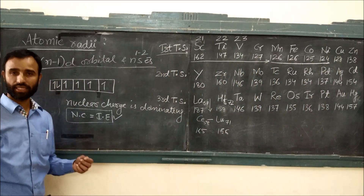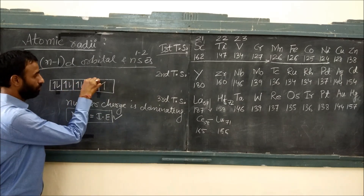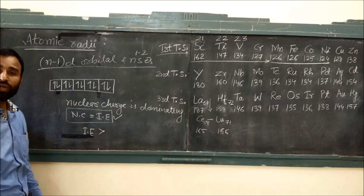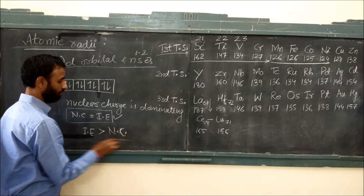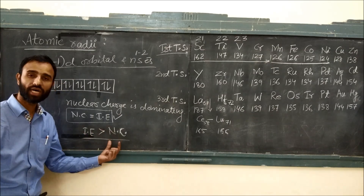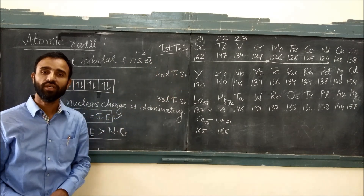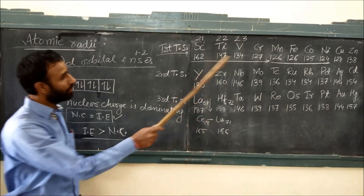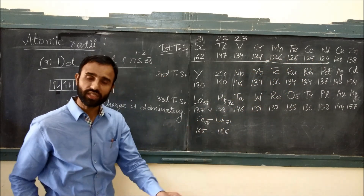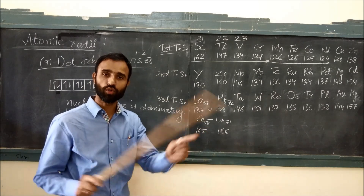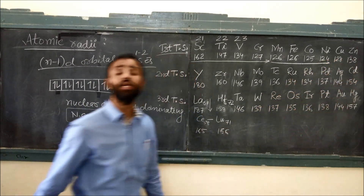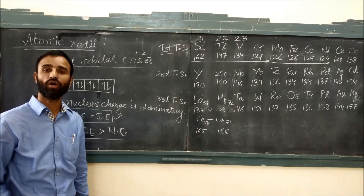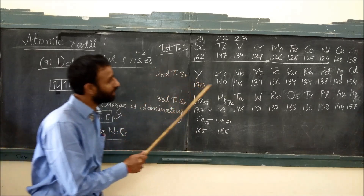After that, because pairing is maximum at the end of the series, inter-electronic repulsions are dominating over nuclear charge. When inter-electronic repulsions dominate, the electron cloud expands and that is why size increases. So to summarize: at the start of the series, nuclear charge is dominating; in the middle, nuclear charge and inter-electronic repulsions almost counterbalance each other; and at the end, inter-electronic repulsions are greater than the effect of nuclear charge. This is the case in all three transition series.